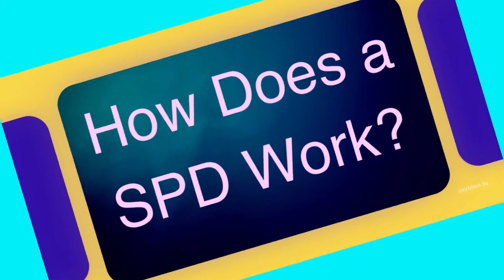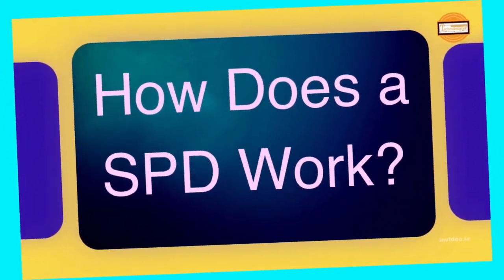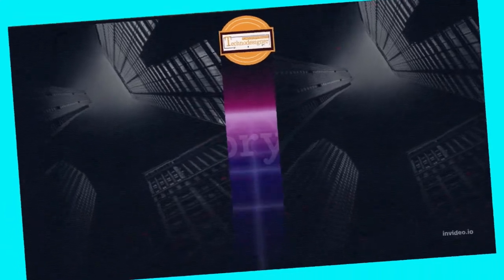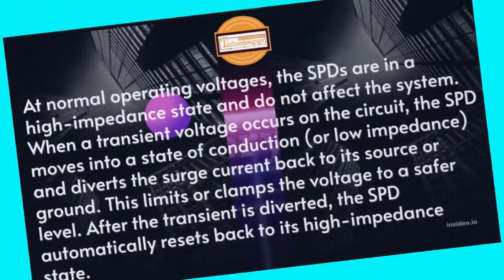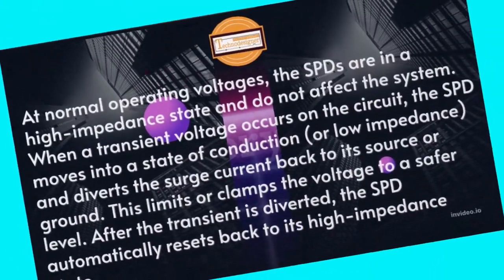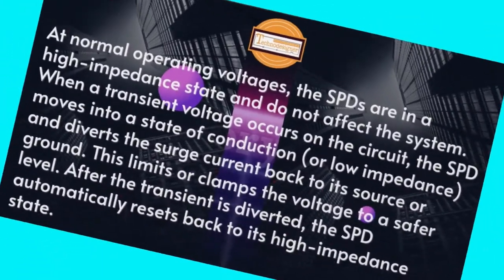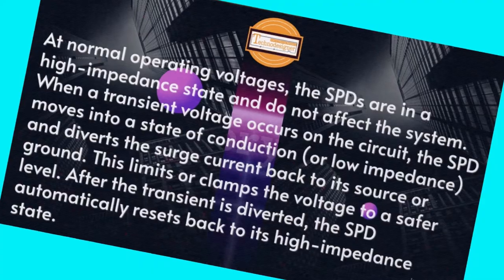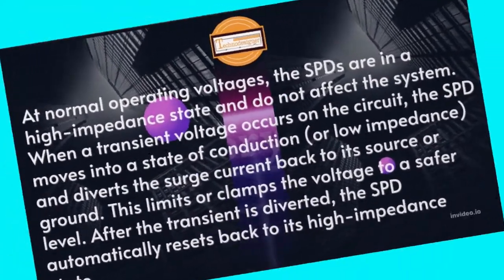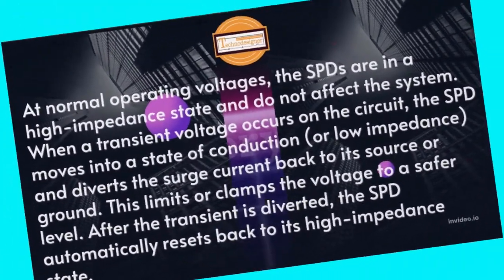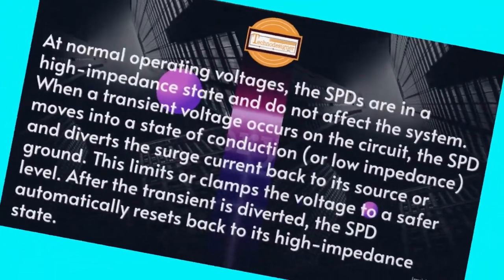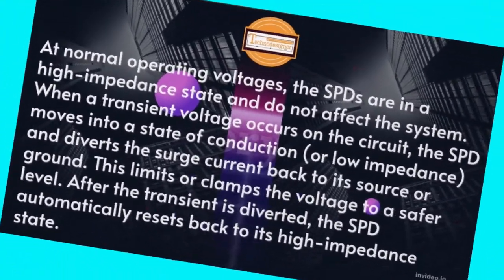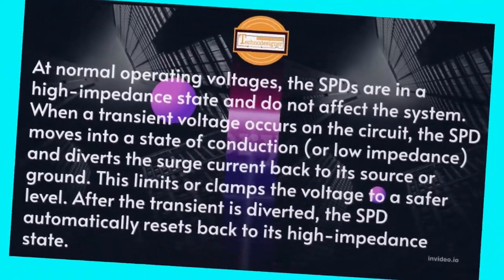How does SPD work? At normal operating voltages, the SPDs are in a high impedance state and do not affect the system. When a transient voltage occurs on the circuit, the SPD moves into a state of conduction, or low impedance, and diverts the surge current back to its source or ground.